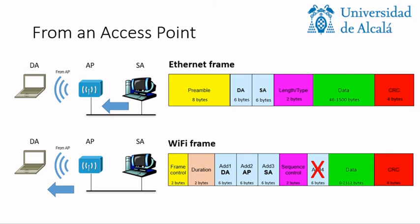What happens in the opposite direction? It is very similar. We have a destination address and a source address. The destination goes into the first address because it is the next step of the mobile communication. The source goes into the third address because it is the other address involved. Address two is the access point address. In this direction there is no problem with data size, because data from the Ethernet frame will always be smaller.